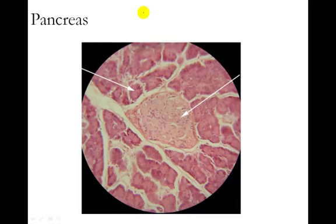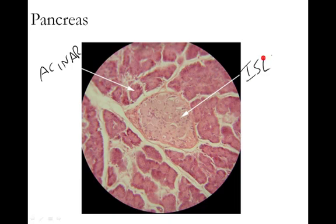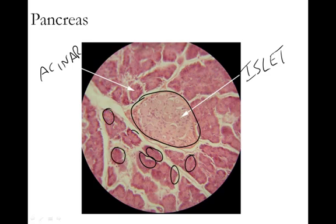Here's another image of the pancreas taken directly from one of our microscope slides in the lab. In this image, you can see very clearly that there are acinar cells and there are islet cells. This is the pancreatic islet right here — you can see how much different that bundle of cells is than all of these bundles of acinar cells, which secrete the enzymes for digestion. Make sure that you can identify an islet versus an acinar cell. You won't be asked to identify specific alpha, beta, delta, or F cells, but know the islet from the acinar.